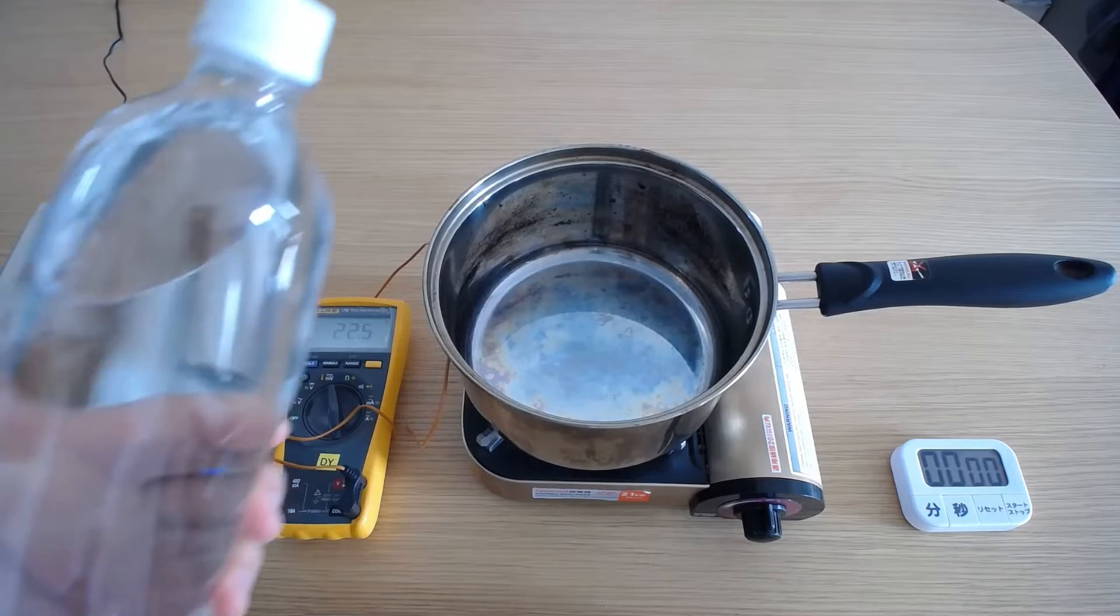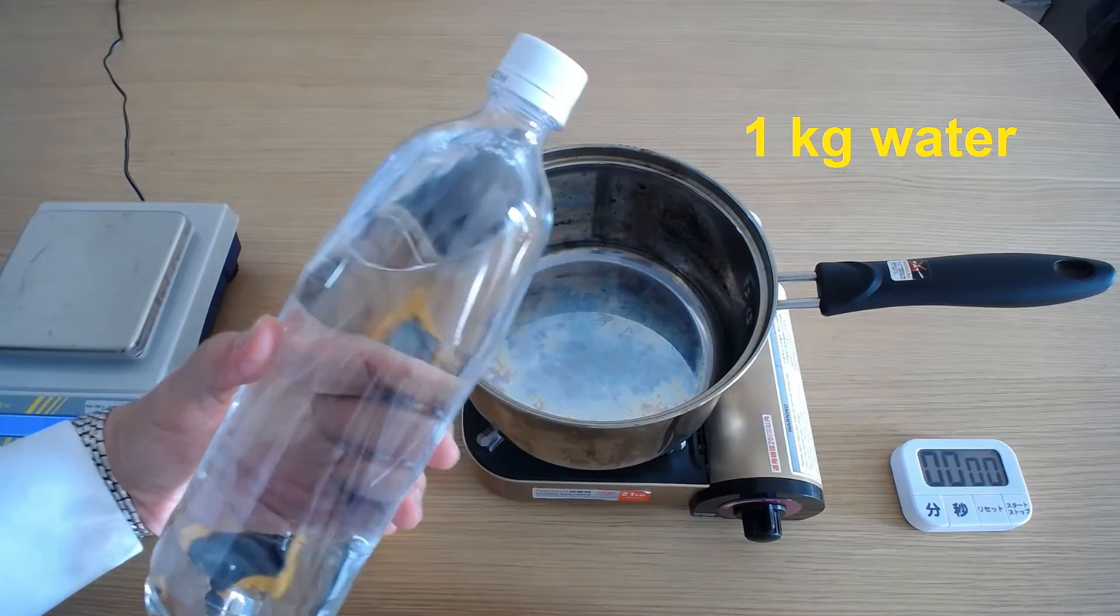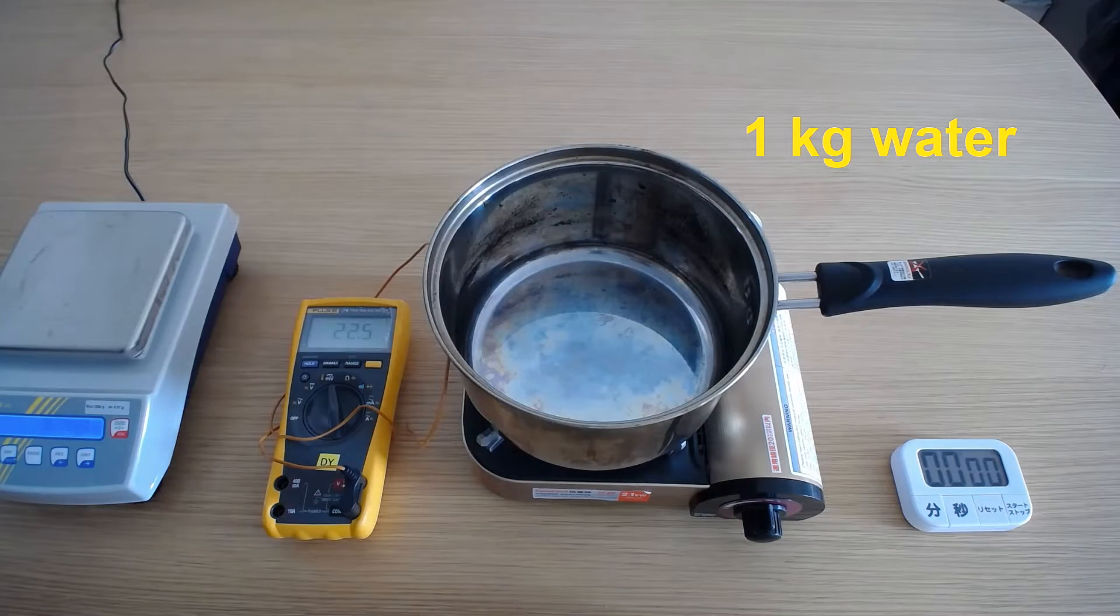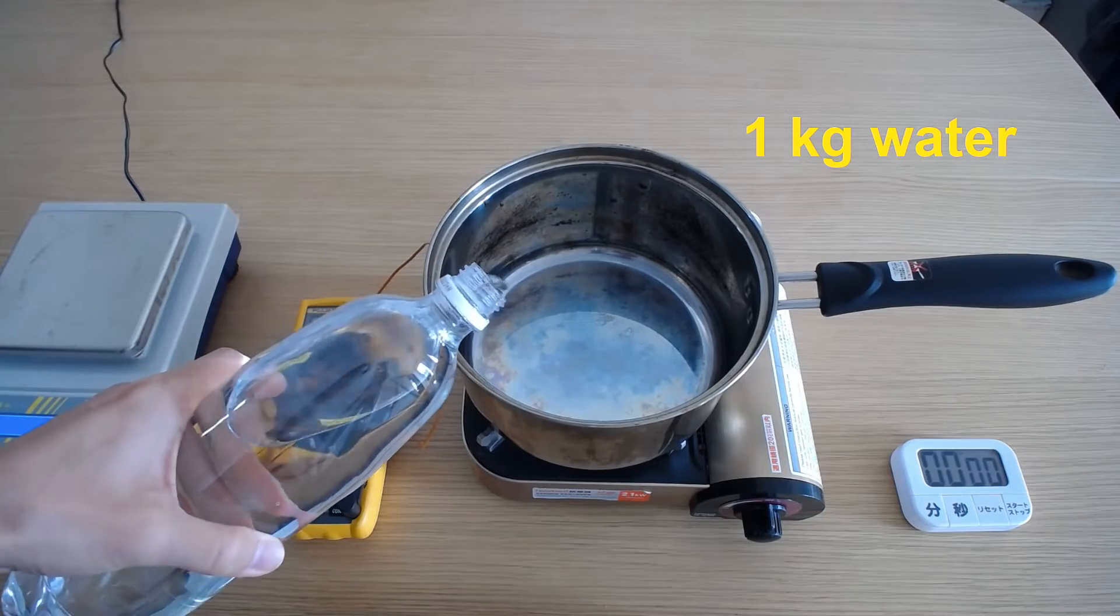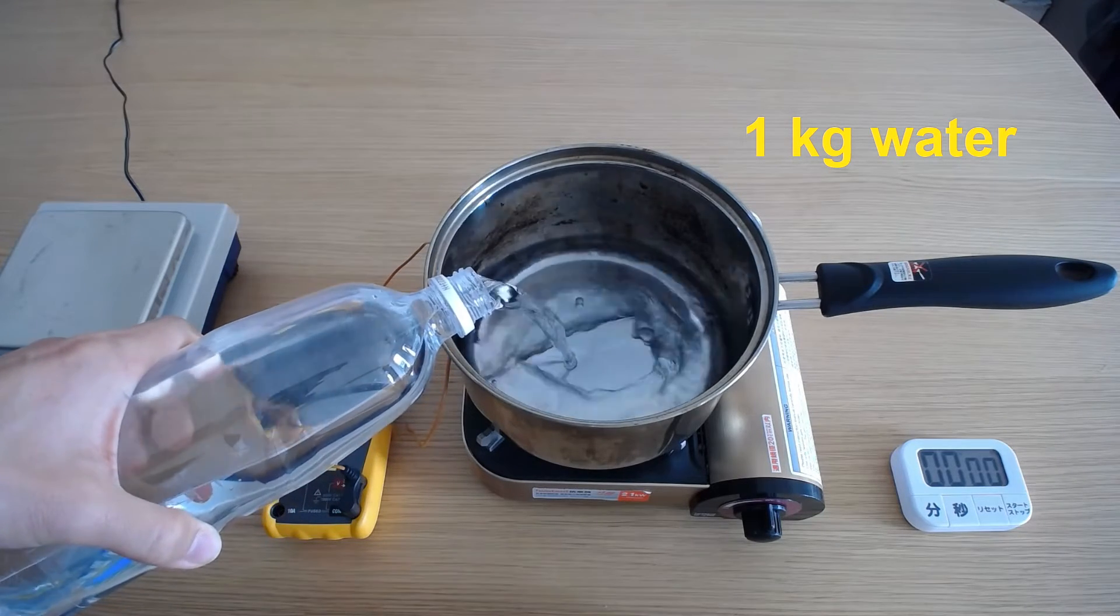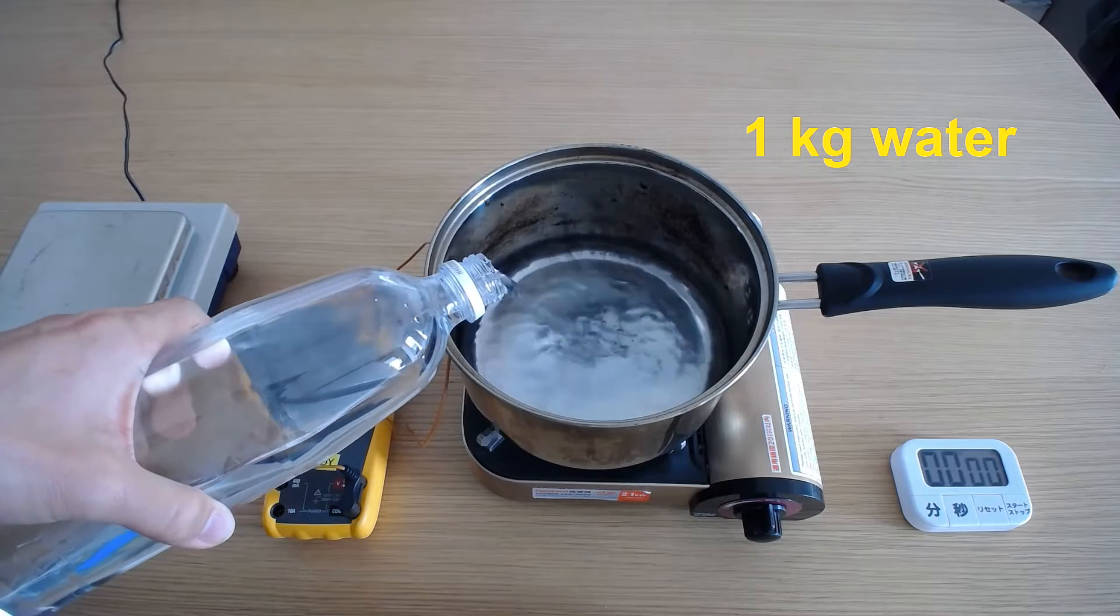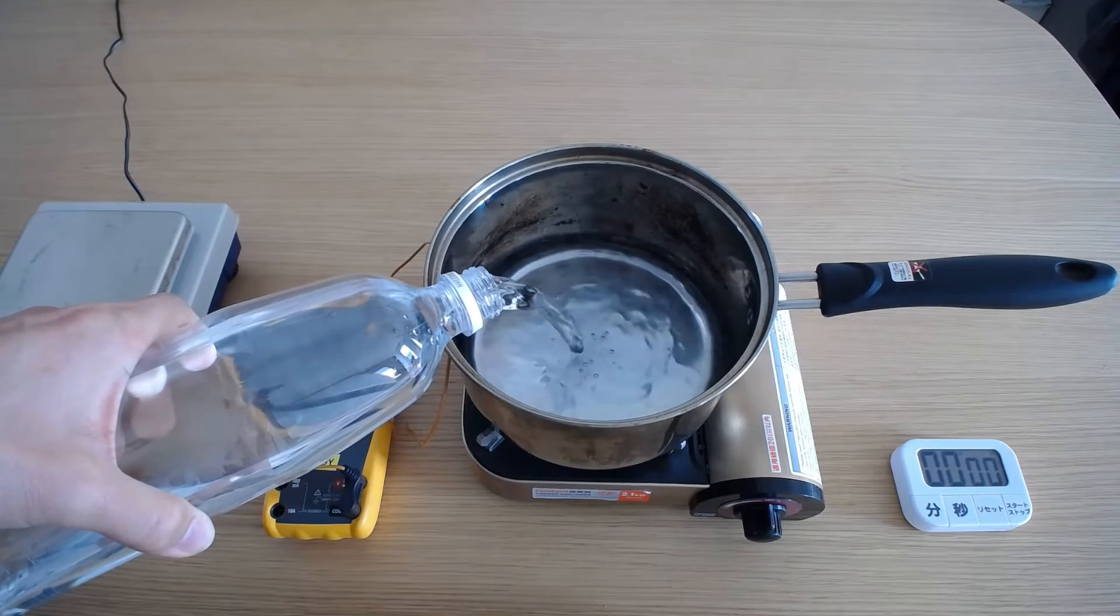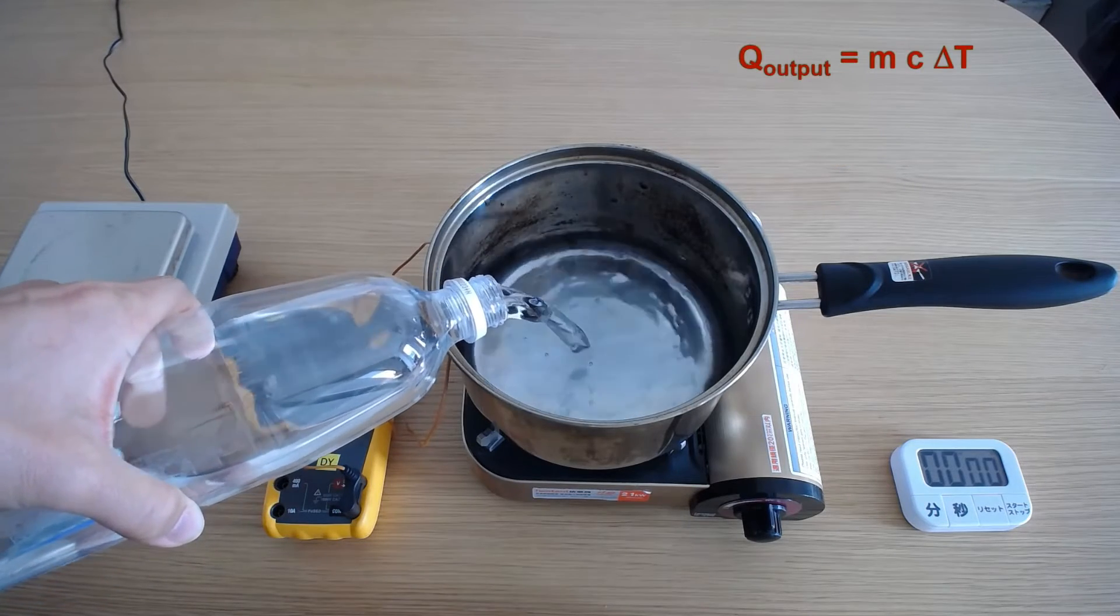For the experiment, we have prepared here 1 litre, that is 1 kg of water, which we will bring to a boil on a gas stove. The amount of energy absorbed by the water can be estimated if we know the temperature difference during the experiment according to mc delta t.